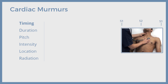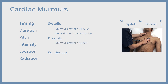Based on the occurrence during a cardiac cycle, murmurs can be systolic, diastolic, or continuous. Systolic murmurs are heard during cardiac systole — that is, the phase between the first and second heart sounds. The murmur occurs after S1 but before S2, and coincides with the feeling of a carotid pulse. Diastolic murmurs, on the other hand, occur after S2 and before S1, after the carotid upstroke. A continuous murmur is heard throughout the cardiac cycle.